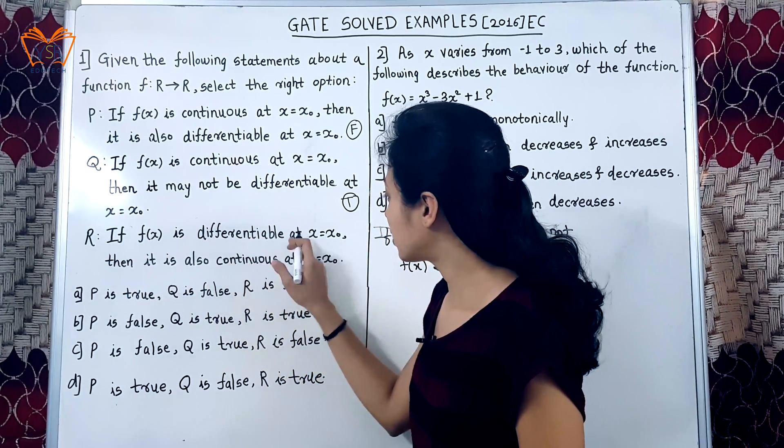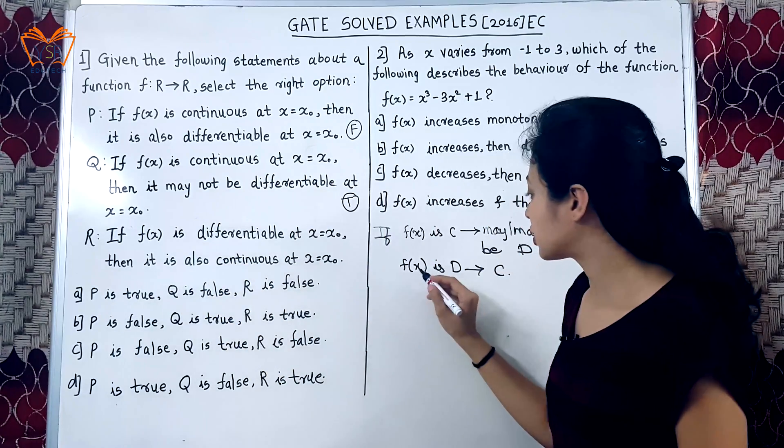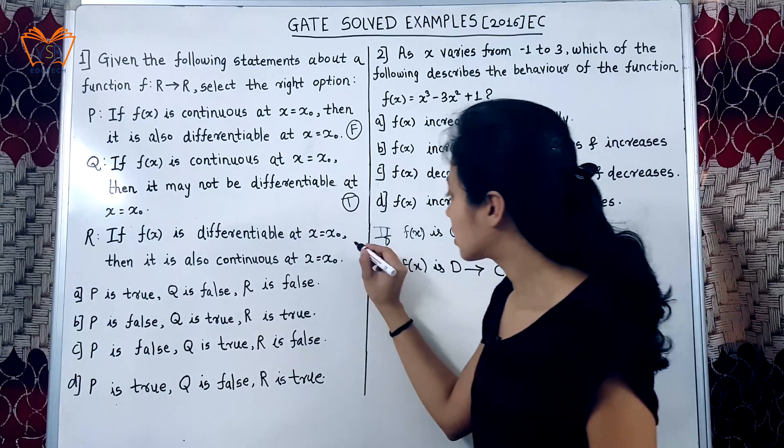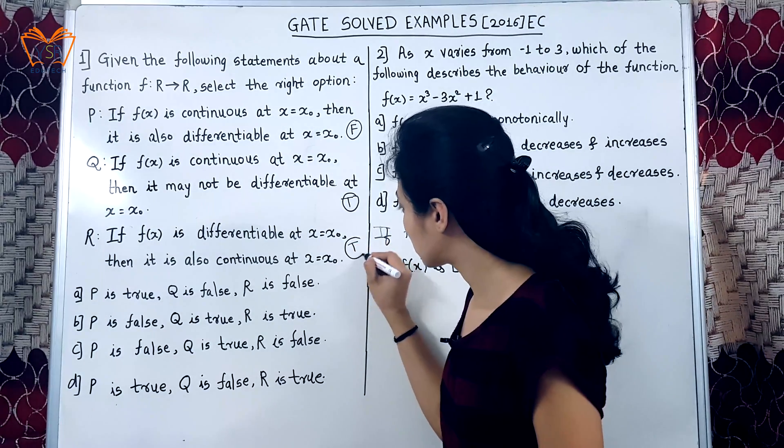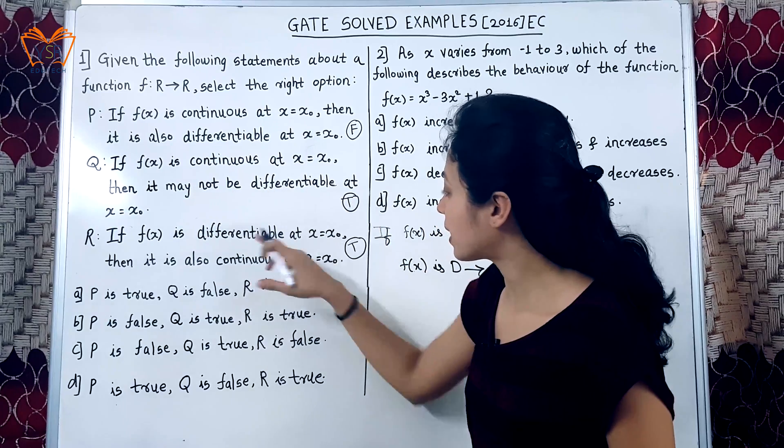If f of x is differentiable at x equal to x0, then it is also continuous. The second statement, if the function is differentiable, it is always continuous. So, we have p as false, q as true and r as true.